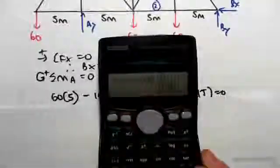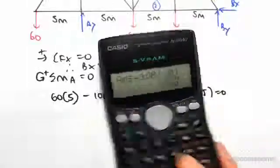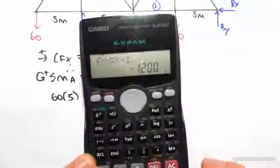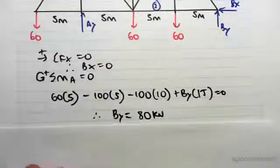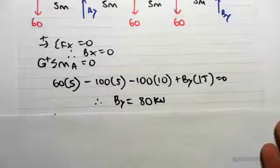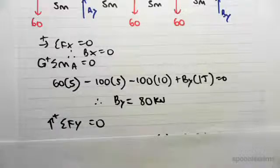Solving this, making By the subject, so we have 60 by 5 minus 100 by 5 minus 100 by 10, putting that over the other side and then dividing through by 15 gives us 80 kilonewtons. So By is 80 kilonewtons.